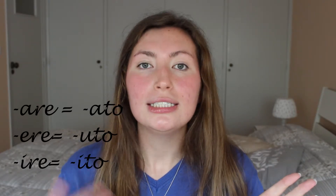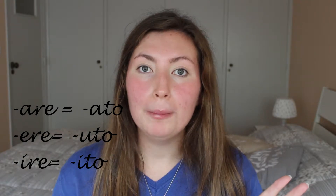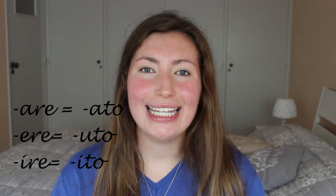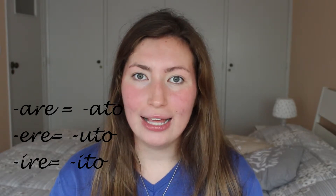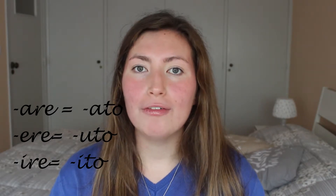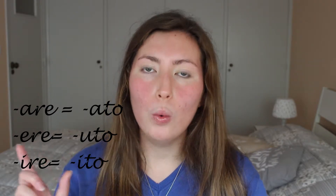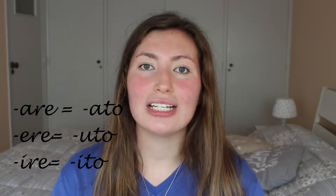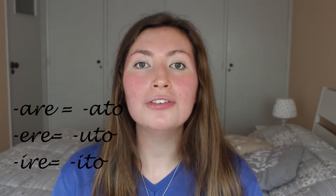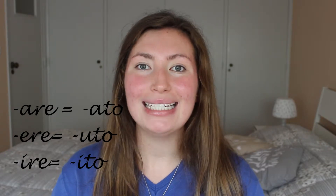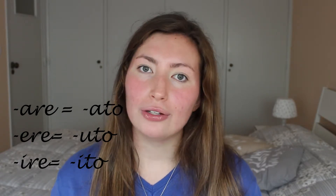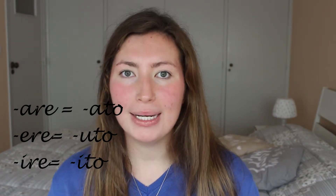If the verb ends in -are, such as mangiare, the participio passato will be mangiato. If the verb ends in -ere, such as vendere (to sell), the participio will be venduto — so ending in -uto. If the verb belongs to the third group in -ire, such as partire (to leave), the participio passato will be partito — so: mangiare → mangiato, vendere → venduto, partire → partito.